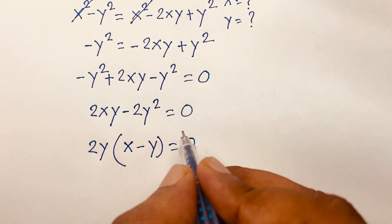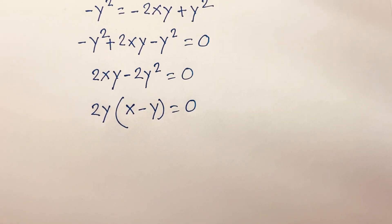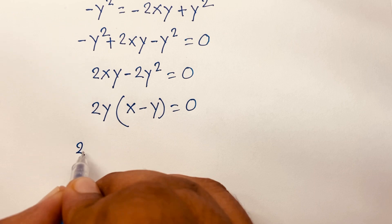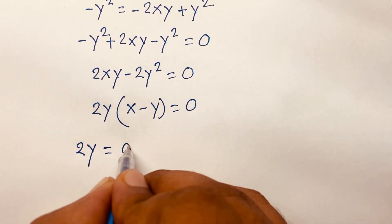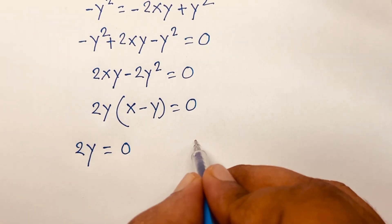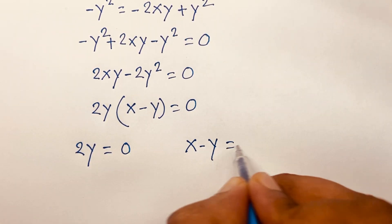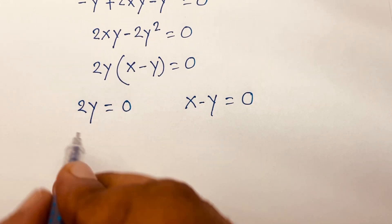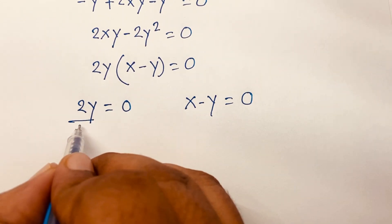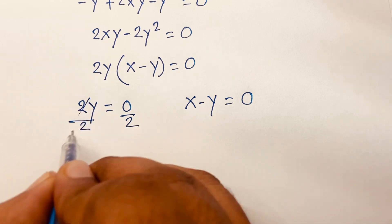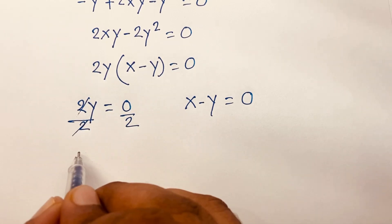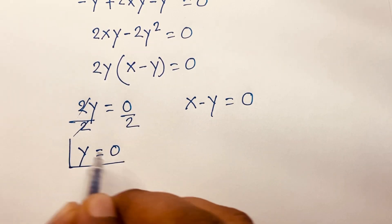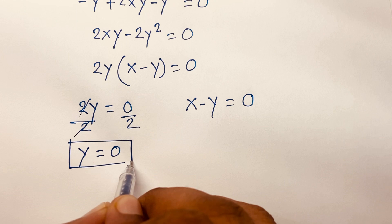This gives us two cases: the first case is 2y equals 0, and the second case is x minus y equals 0. Dividing both sides of the first case by 2, we get y equals 0.